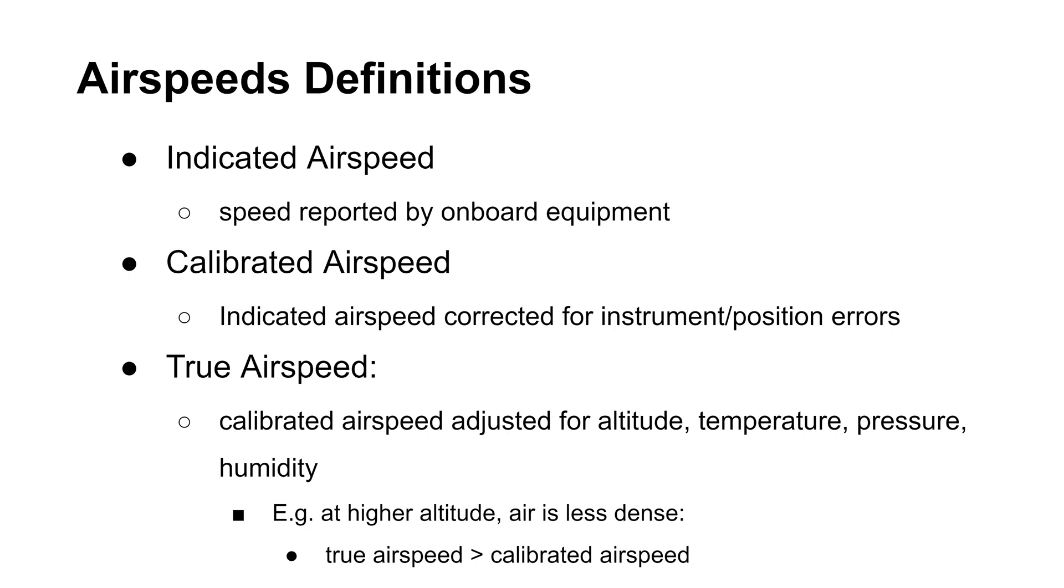The next important concept to cover is airspeed. First, there is the indicated airspeed, which is the airspeed at which the aircraft moves through the air on your flight path according to onboard equipment. However, equipment on airlines such as wind flaps may cause instrument error. When you adjust indicated airspeed for this instrument and other position errors, you get calibrated airspeed.